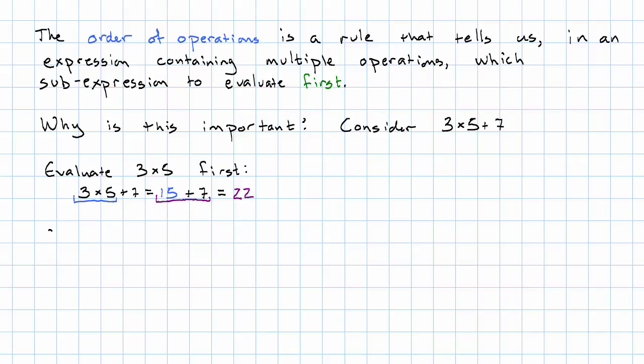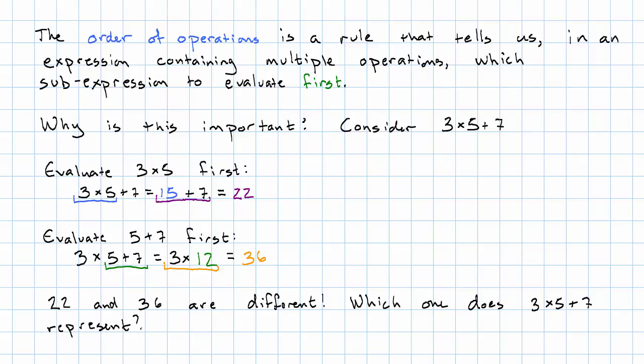On the other hand, if we were to evaluate 5 plus 7 first, 5 plus 7 is 12. Evaluate 3 times 12, that's 36. But obviously, 22 and 36 are different. Which one does 3 times 5 plus 7 represent?